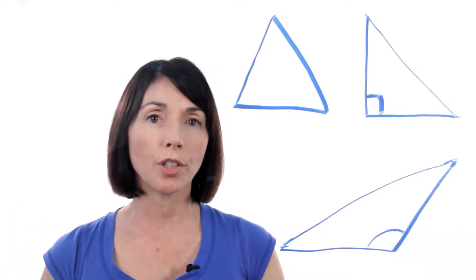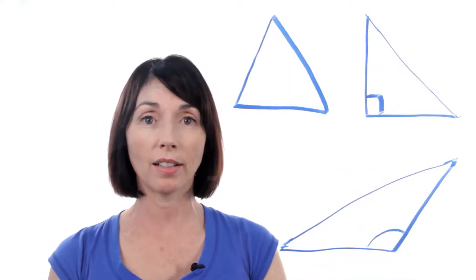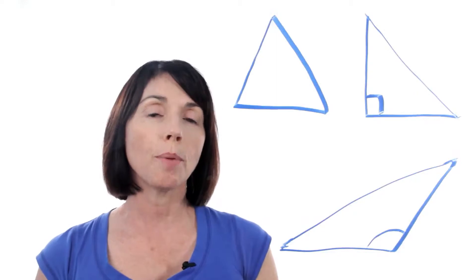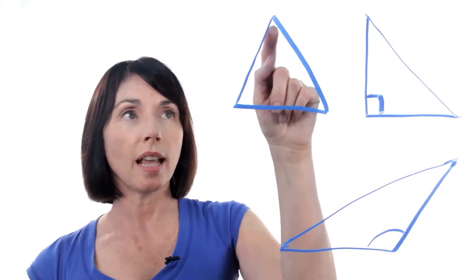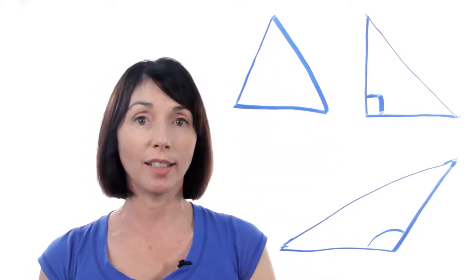One way to classify triangles is by their interior angles. Now every triangle has three interior angles. If all those angles measure less than 90 degrees, that's called an acute triangle. That would be this one here. Each one of these angles measures less than 90 degrees.